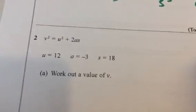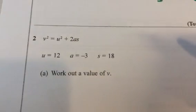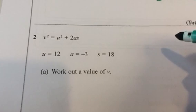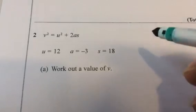Then in question 2, it has v squared equals u squared plus 2as. You might recognize from physics or mechanics. u equals 12, a equals minus 3, s is 18. Work out the value of v.